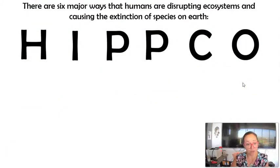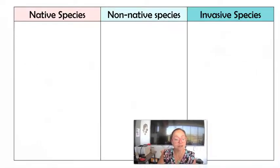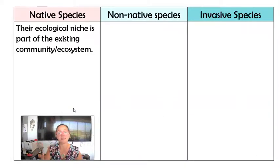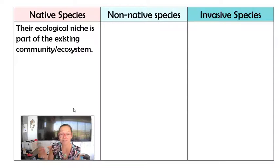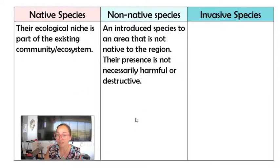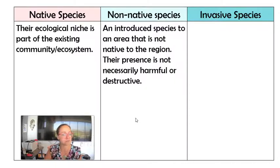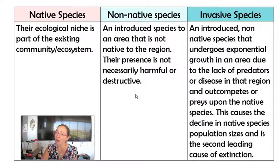The next thing disrupting ecosystems is invasive species. A native species is one that belongs in that ecological niche or food web — it's evolved having predators, being a predator, having symbiotic partners, and competing with other species. An introduced species is not native; it has been brought into an area. Introduced or non-native species don't always have to be disruptive or harmful to an ecosystem, but if they are, we call them an invasive species.